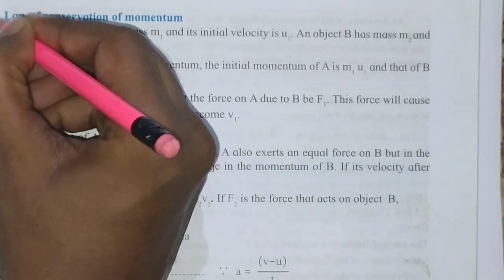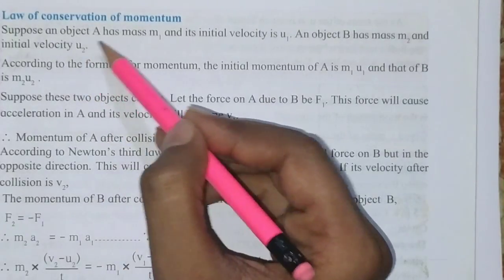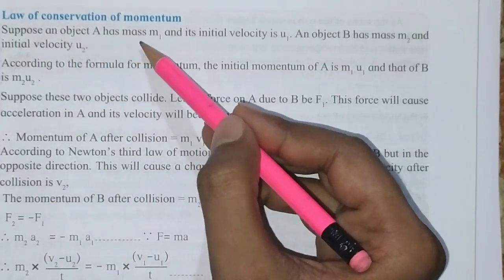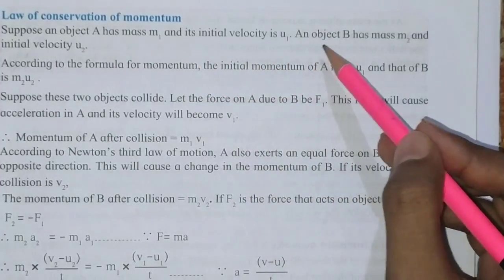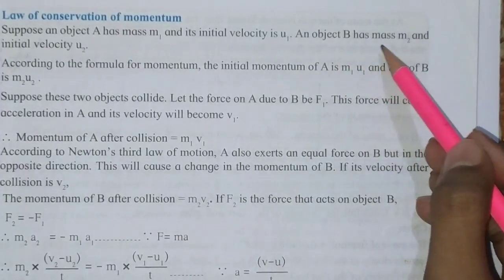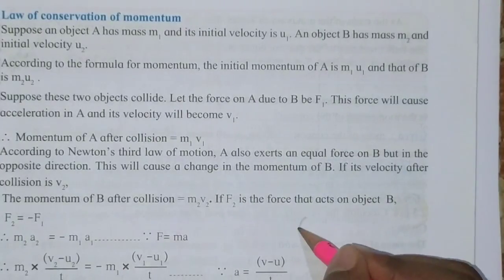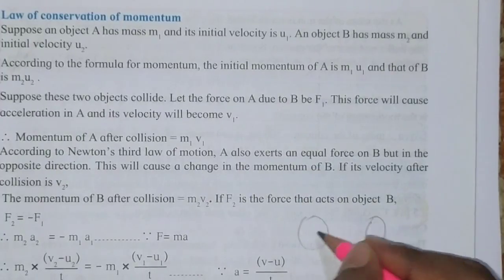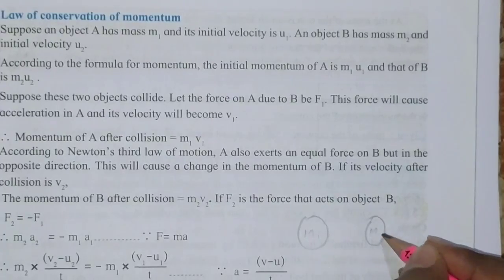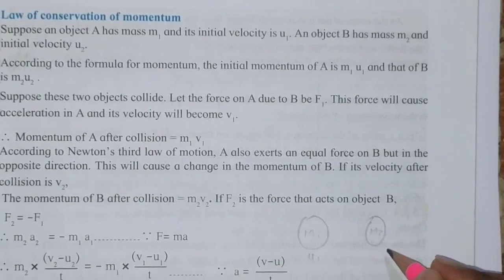Our topic is the law of conservation of momentum. Suppose here is an object A of mass m1 and its initial velocity is u1, and another object B has a mass m2 and initial velocity u2. So suppose you have two balls — ball A of mass m1 with initial velocity u1, and ball B of mass m2 with initial velocity u2.